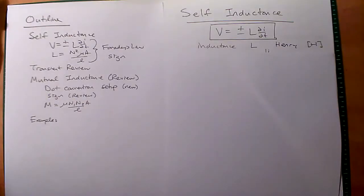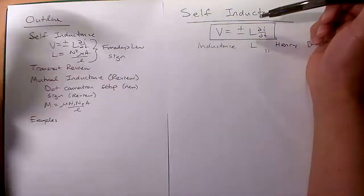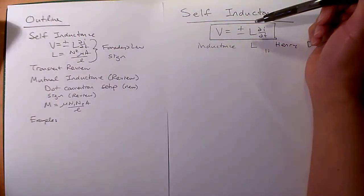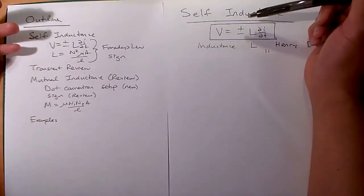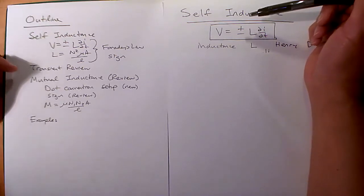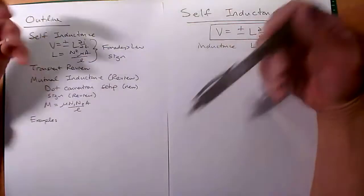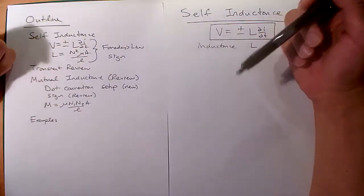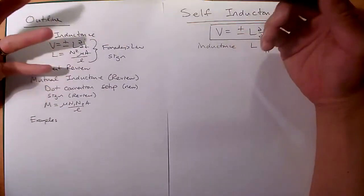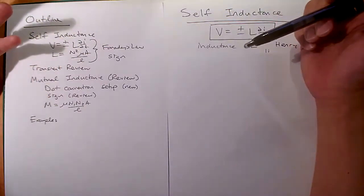Hi everyone. This is ET350 lecture 10. What we're going to cover today is kind of a review of self-inductance and mutual inductance transients. We've seen a lot of this before in ET250, but we're going to bring it back up in light of our magnetic principle understanding, especially with Faraday's law.